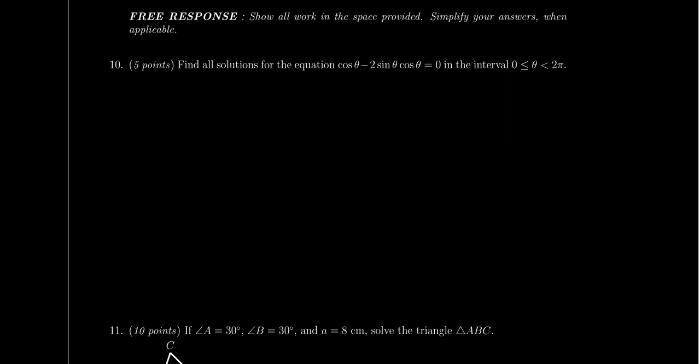Now let's talk about the free response section. Question ten involves solving trigonometric equations. It's on the easier side — some basic factoring or the quadratic formula at worst, and no trig identities are necessary. However, unlike the multiple choice, this question requires you to format the solution yourself — it could ask for the general solution or all solutions on an interval, in degrees or radians. Proper formatting will be a significant part of grading.